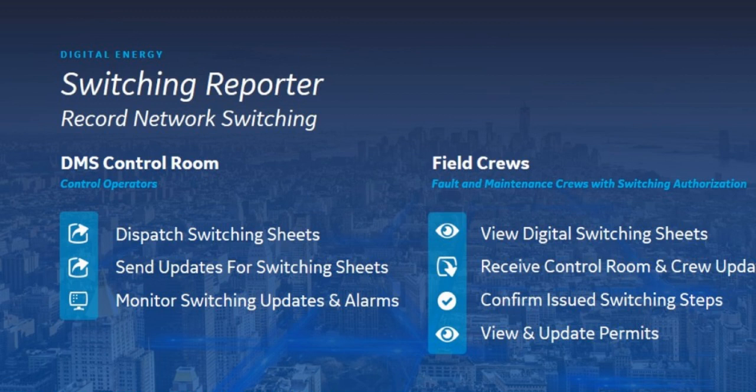The switching reporter takes that same digital switching sheet but now allows the field person to update the network status for their order and monitor changes. It's the ability to update switching steps in the field, reducing communication bottlenecks. Before, you could only view the switching order; now we're actually actioning those steps in the field, making updates, and altering the network status from the field. Customers who use the switching reporter module also get the switching viewer — they're a progressive solution. The switching viewer and reporter resonate very well for North America and South America customers today.